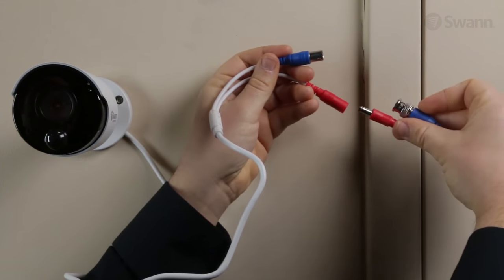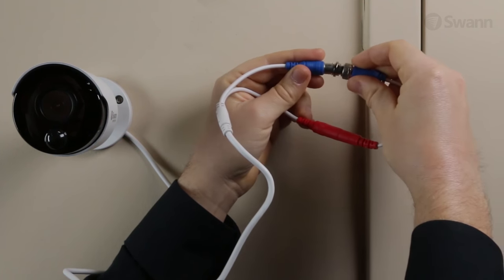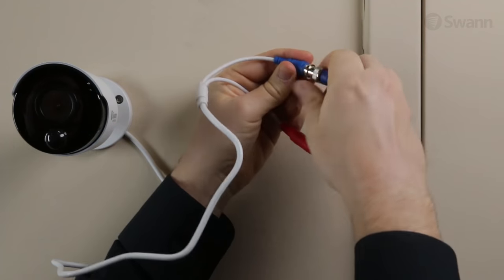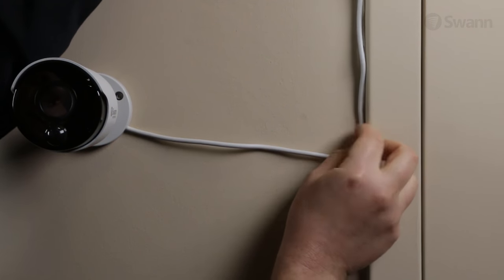Now, with the camera properly mounted, connect one end of the extension cable to the matching plugs on the camera's short cable. Then, carefully route the extension cable to the DVR or NVR recording system.